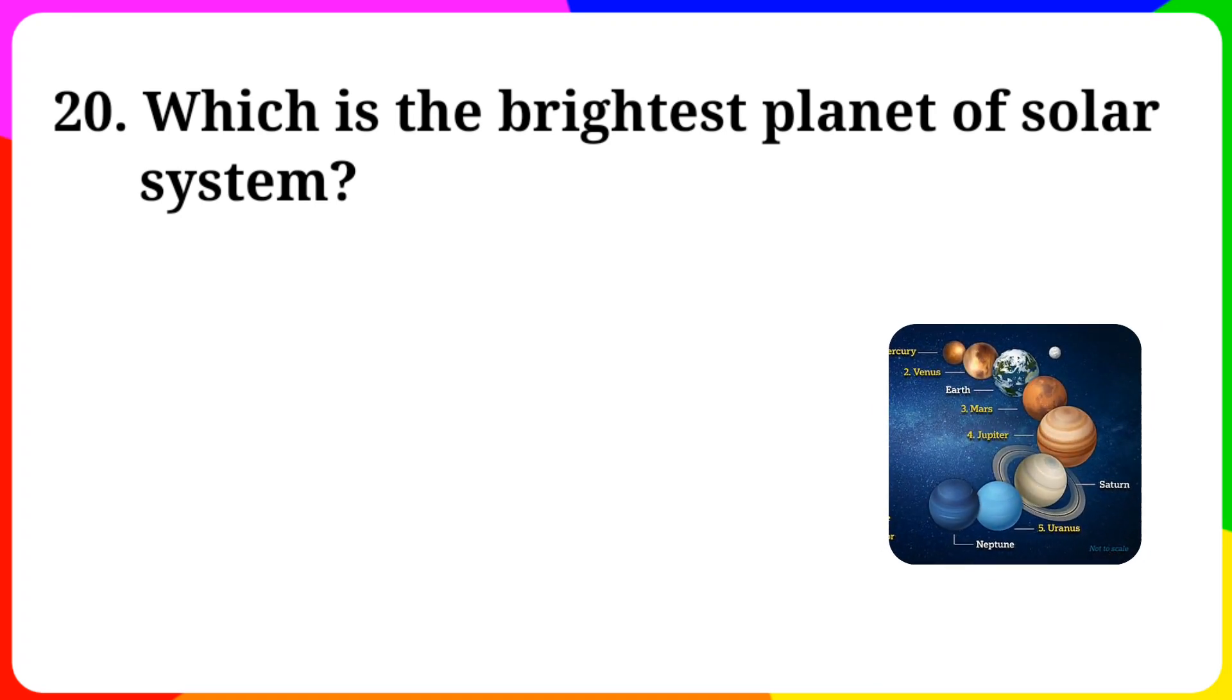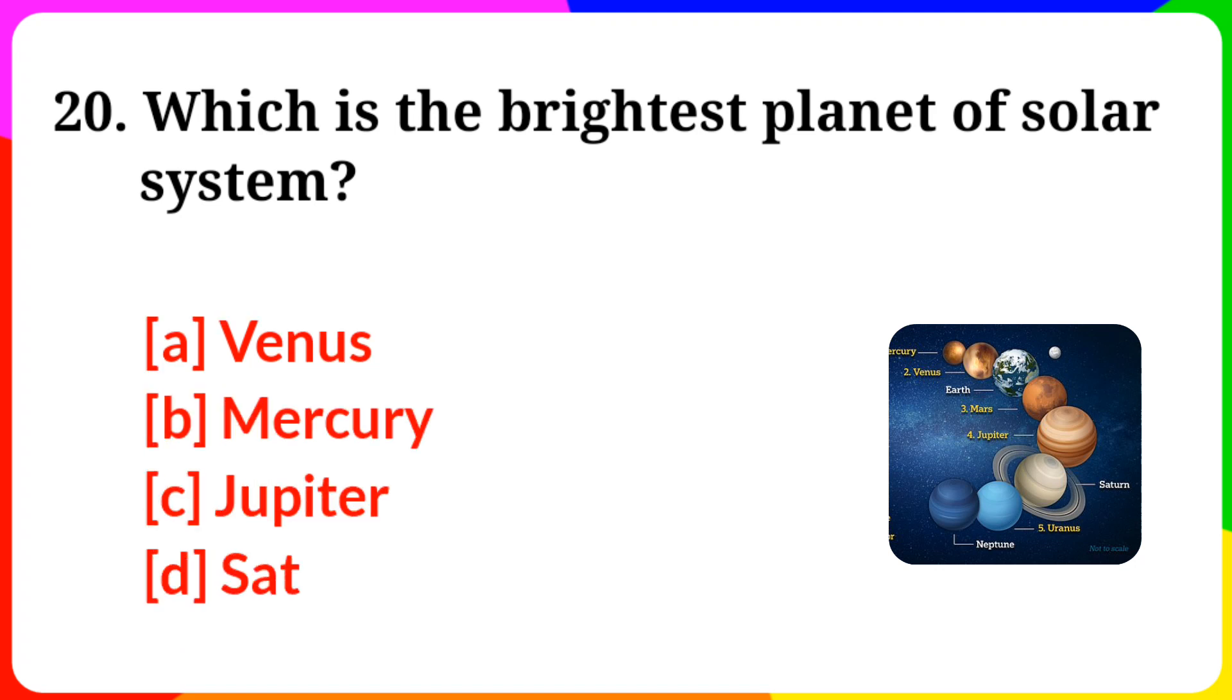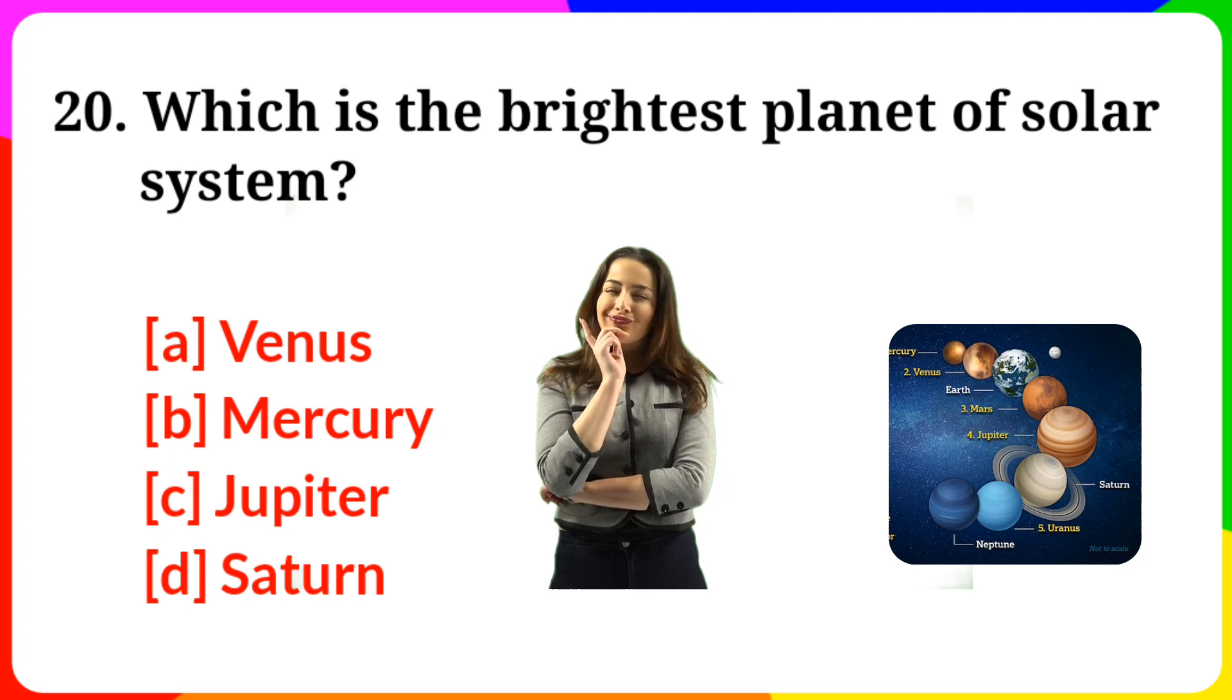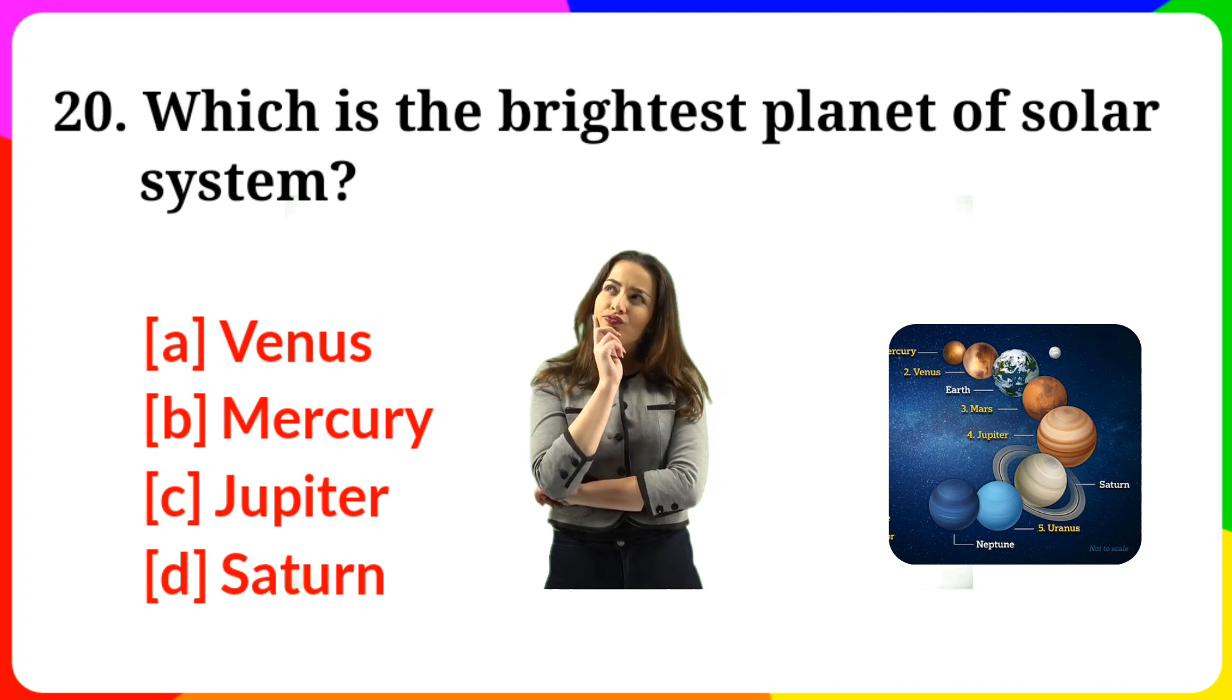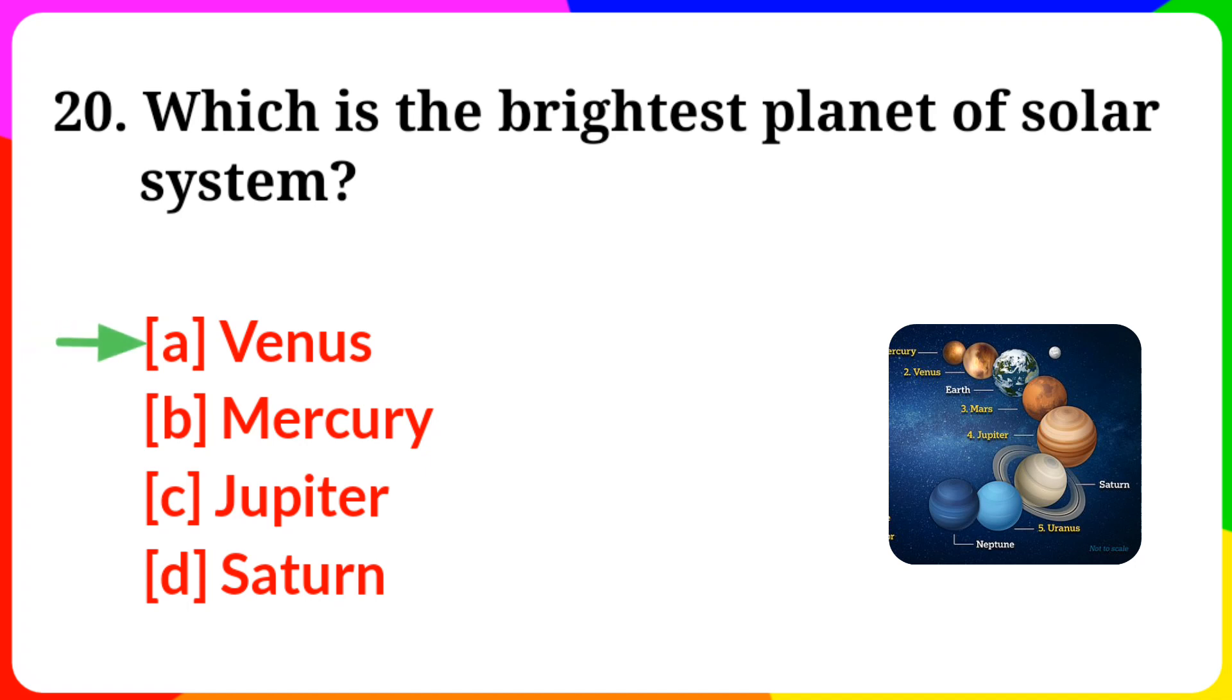Question number 20. Which is the brightest planet of solar system? Option A: Venus. B: Mercury. C: Jupiter. D: Saturn. Answer is option A, Venus.